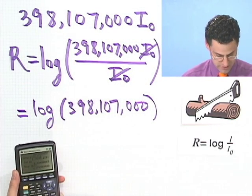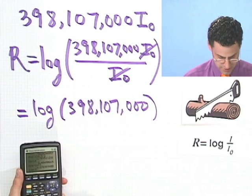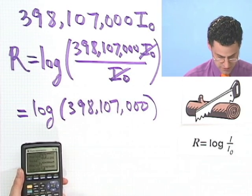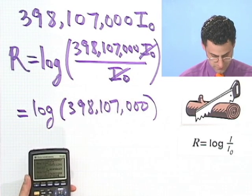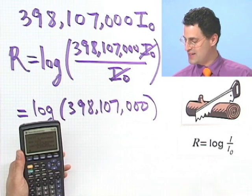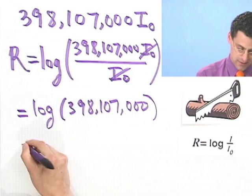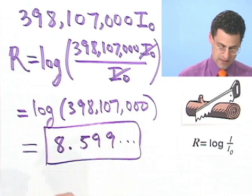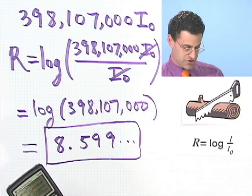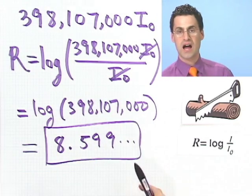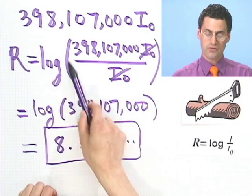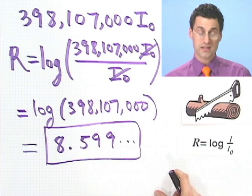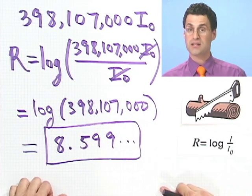Let's see if I can actually compute that — I don't know, that might be a big number, but we'll give it a shot. Computing on the calculator: 8.599 on the Richter scale. That is — now you understand why I was so scared. I computed that on a calculator, and I see that this earthquake registered an 8.599 on the Richter scale. So the Richter scale is a logarithmic scale that requires logs — now you can figure out exactly how serious an earthquake was. Well, I'm going to collect myself, collect my thoughts, and we'll come back and try some more word problems up next.